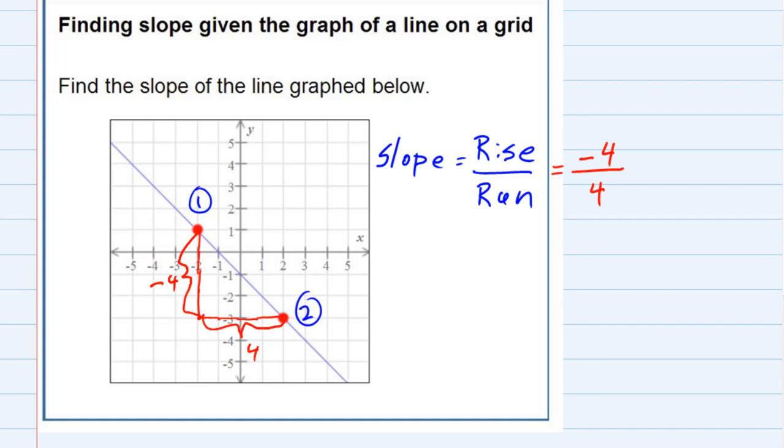So then I would just want to simplify that, since it's a fraction. Negative four divided by four is negative one, so my slope for this line is negative one.